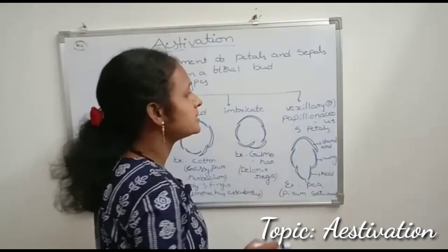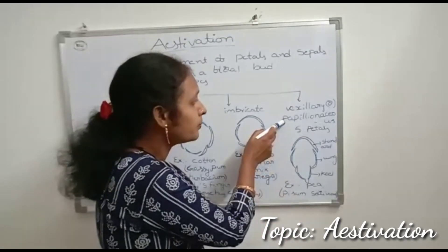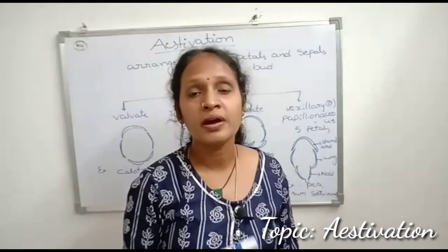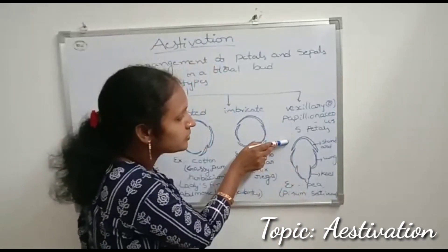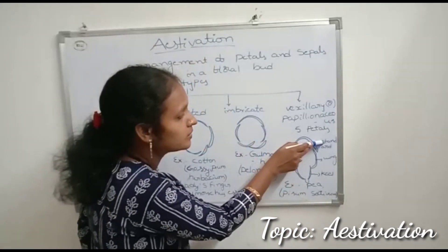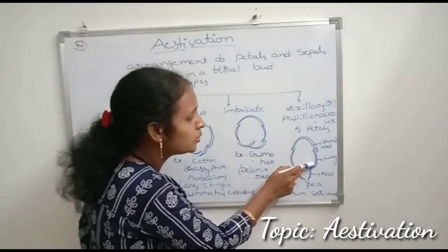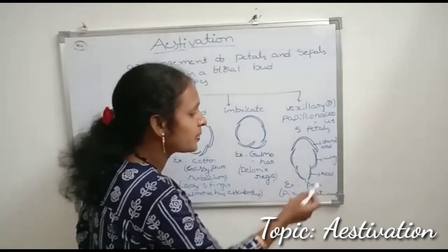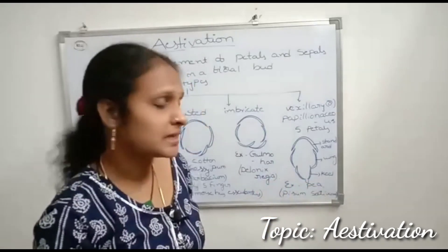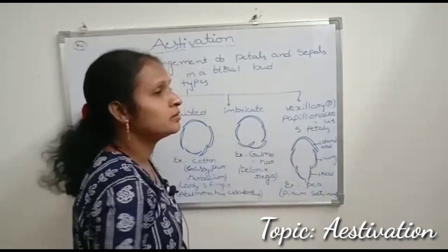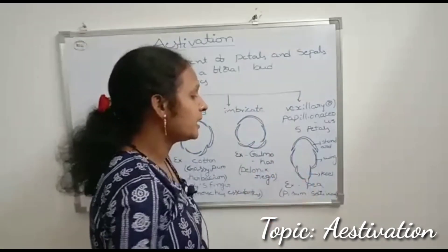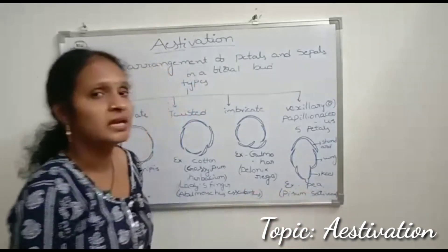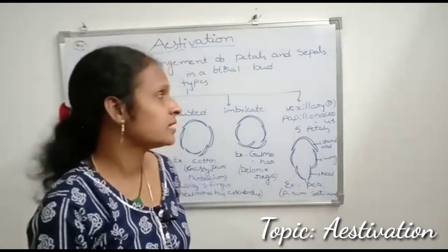Vaxillary or papilionaceae estivation is mostly common in Fabaceae plants. They have five petals: one largest standard petal, which overlaps two wing petals, and those lateral wing petals again overlap the two smallest keel petals. This modification is called papilionaceae. Example: pea plant, scientific name Pisum sativum.